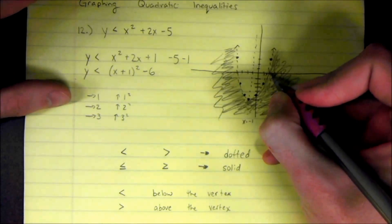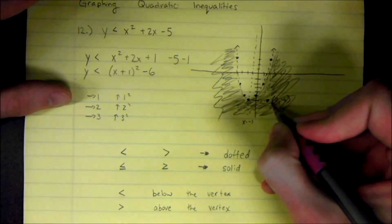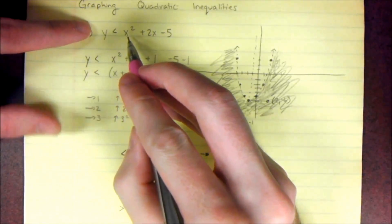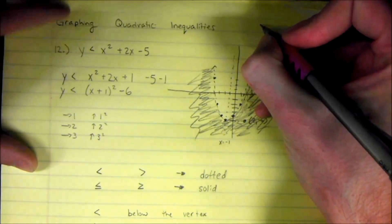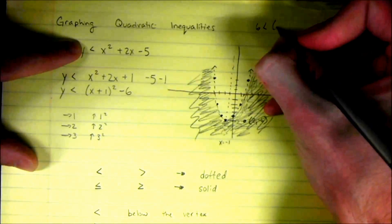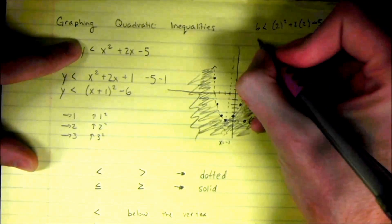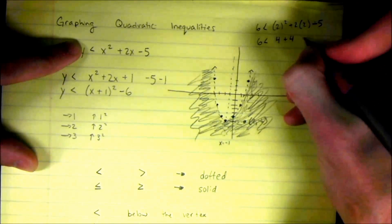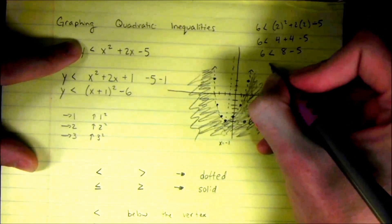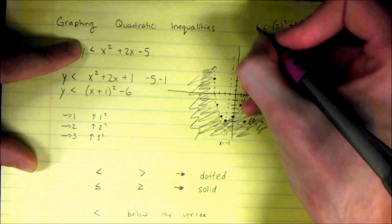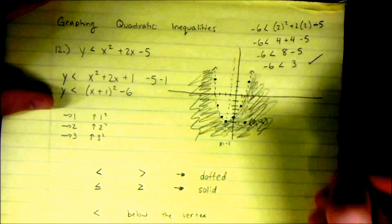If I pick a point in the shaded region, it should be a solution to the inequality. For example, the point (2, -6) is inside the shaded region, so it should be a solution. Plugging in x = 2 and y = -6, I get: is -6 less than 4 + 4 - 5? That's -6 less than 3 — a true statement, so the answer checks out.